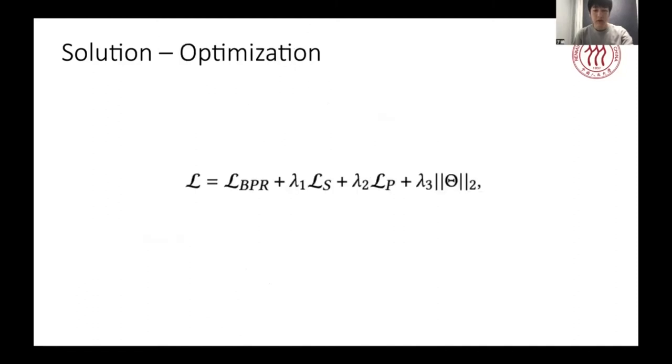For the optimization of our proposed method, we treat the proposed two contrastive learning losses as supplementary and leverage a multi-task learning strategy to jointly train the traditional ranking loss and the proposed contrastive losses.